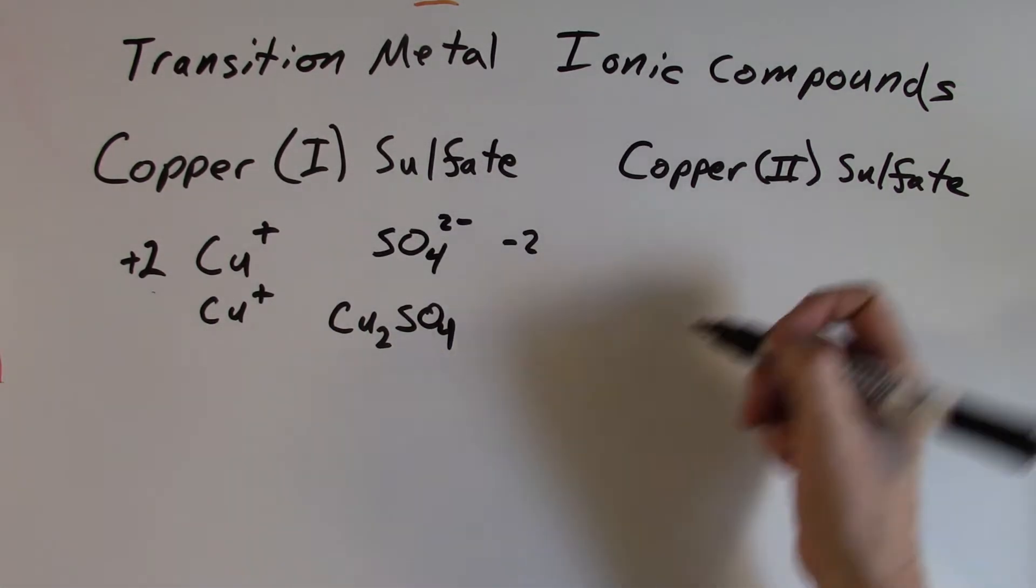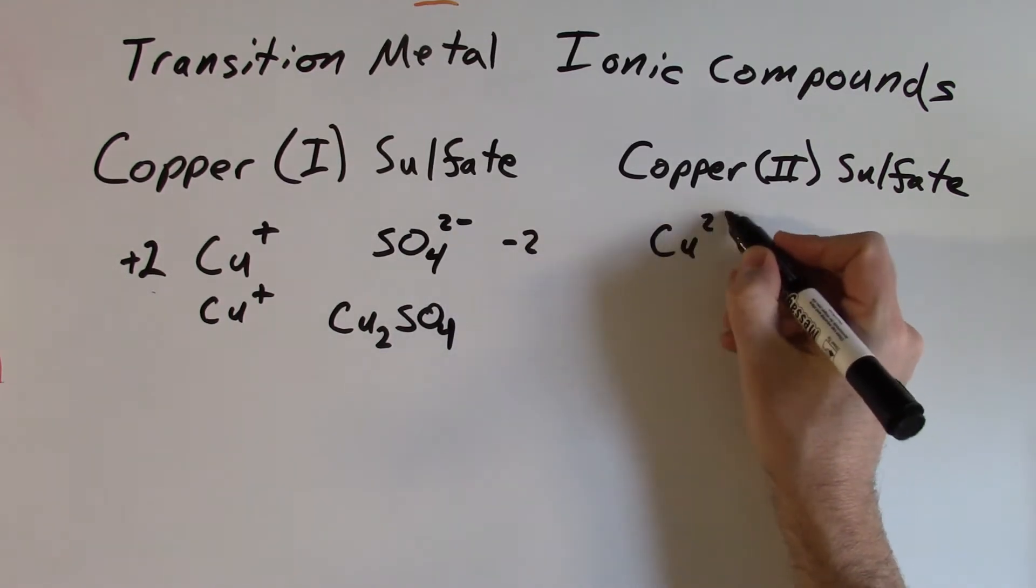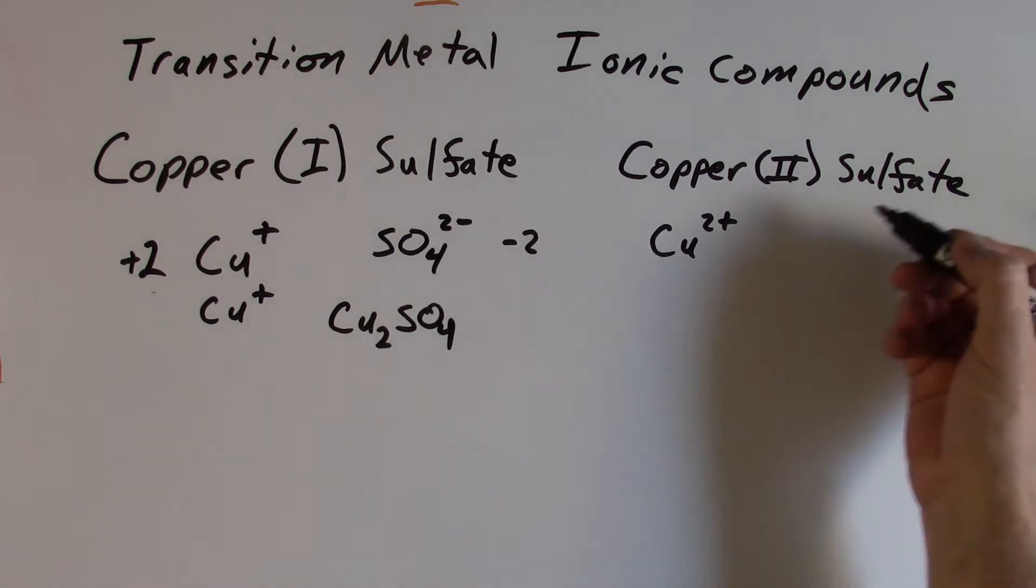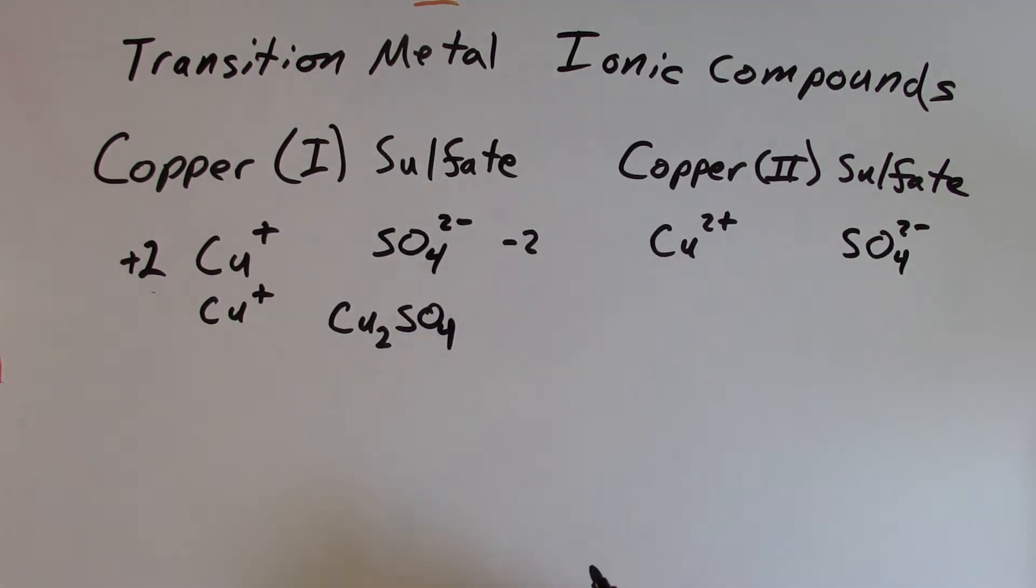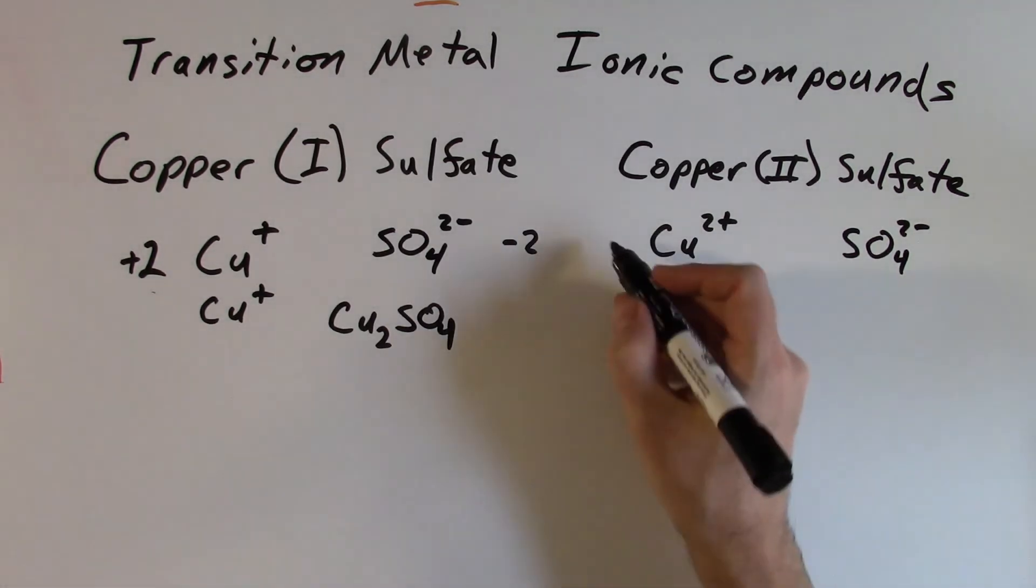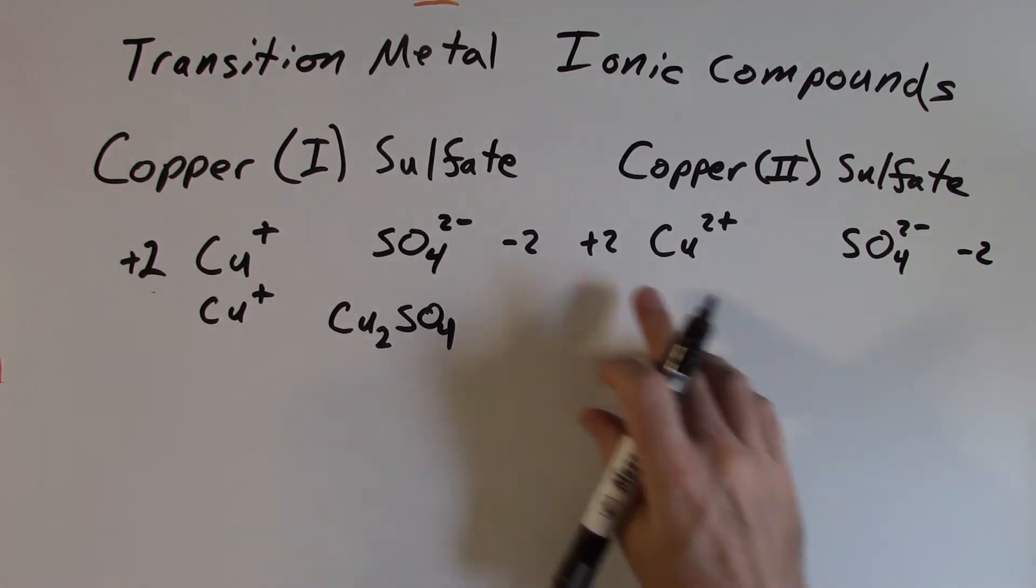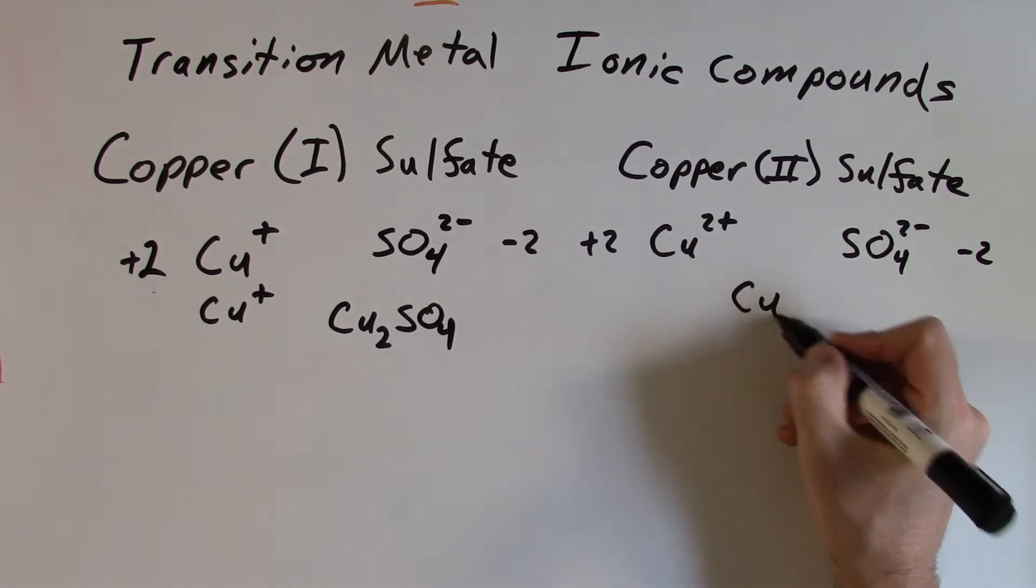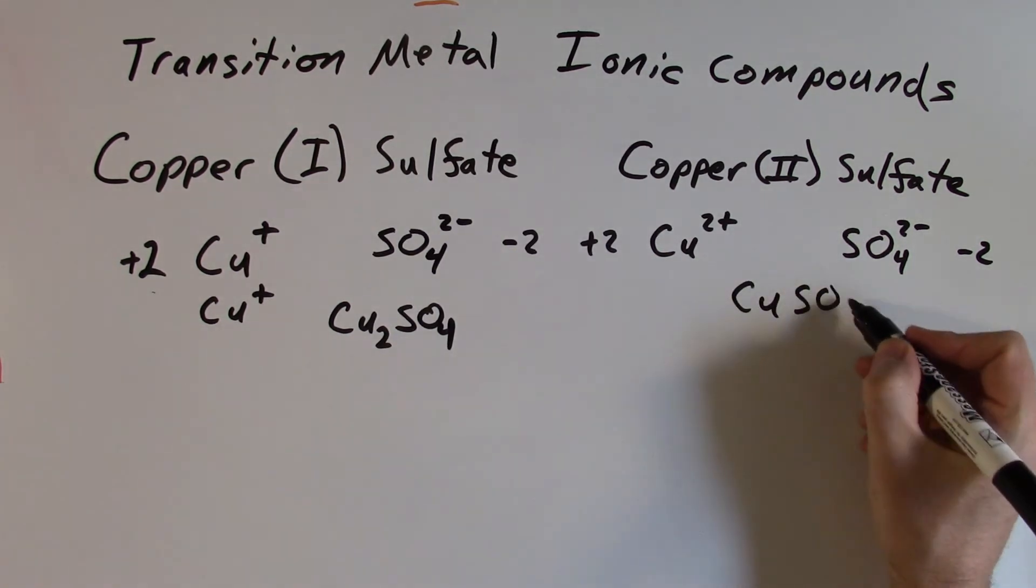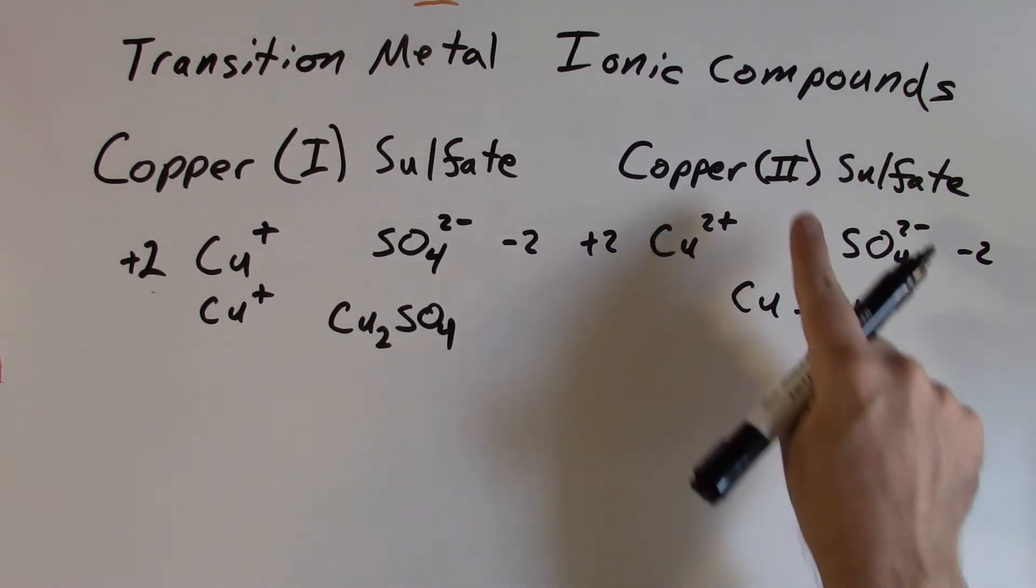So for Cu2 sulfate, we'll do that one over here. Cu2 then is telling us that the copper ions here have a plus two charge for this. It's the same sulfate ion, so SO4 with a negative two charge for this. And so I got a total of plus two from the one copper. I have a total of negative two from the one sulfate. Here now, those are equal, so I can use just one of each of those ions. So Cu, and then SO4. So that formula there is balanced.